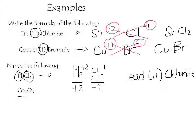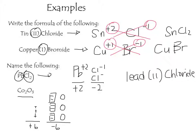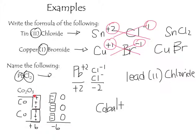For Co2O3, we have cobalt and three oxygens. Each oxygen has a minus 2 charge, giving a total anion charge of minus 6. The cation total must be plus 6. There are two cobalts, so we distribute: plus 6 divided by 2 gives each cobalt a plus 3 charge. We write this as cobalt(III) oxide.